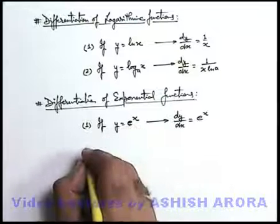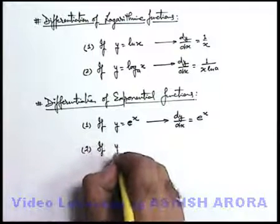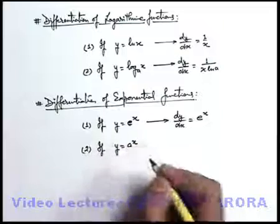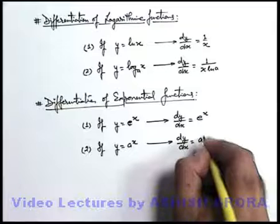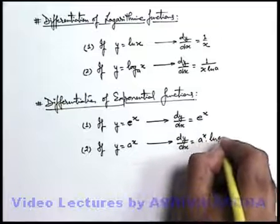Now if other than e, some other constant is given, say if we're given with y equals a to power x, then its differentiation dy by dx can be written as a to power x ln a.